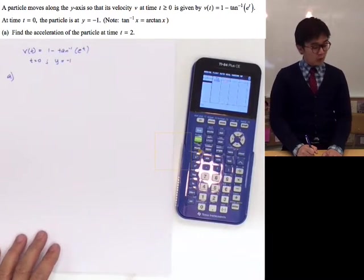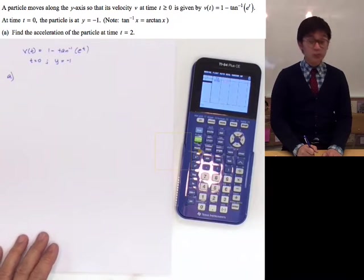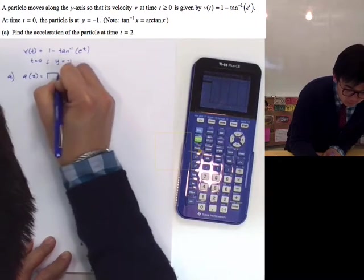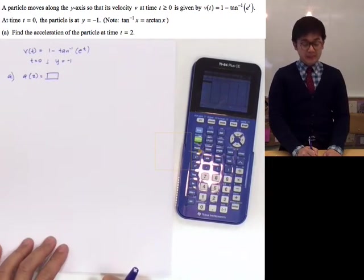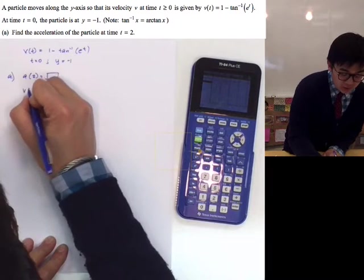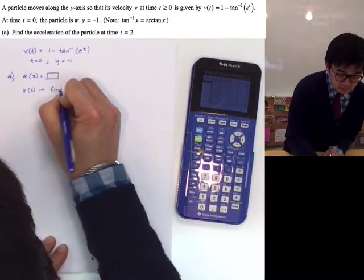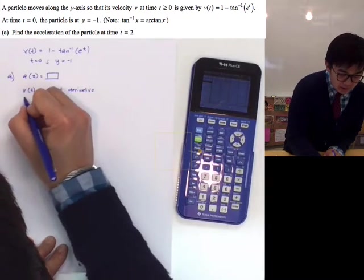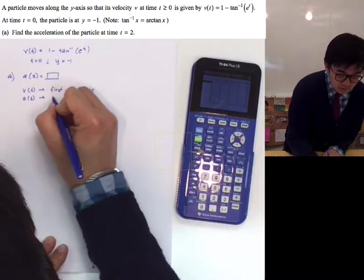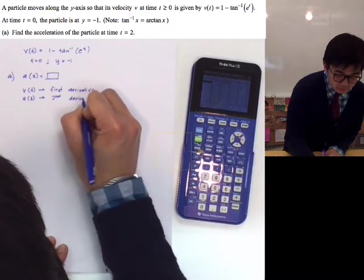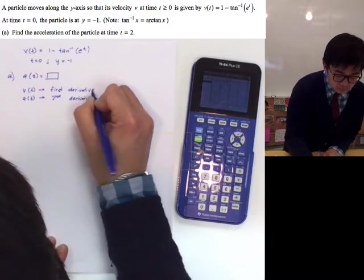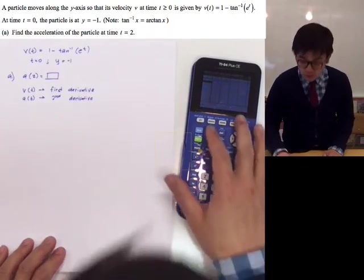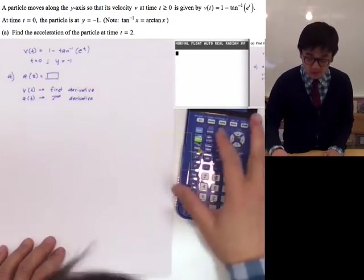So to answer the first question, we are supposed to find the acceleration of the particle at t is equal to 2. Now to find the acceleration at t equals 2, we know that the velocity function is the first derivative and the acceleration is the second derivative. So to find the acceleration at time t is equal to 2, all we need to do is to use the calculator.